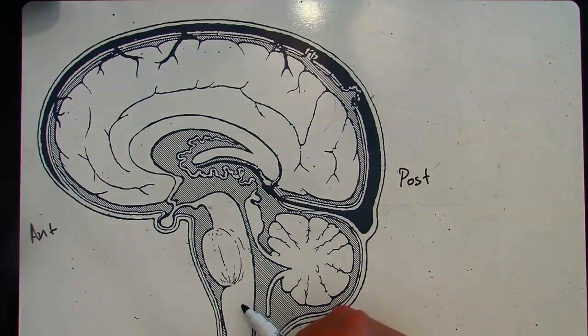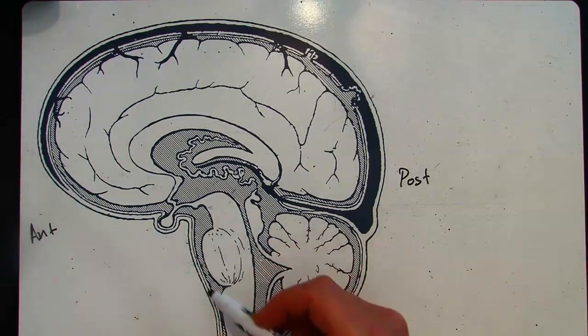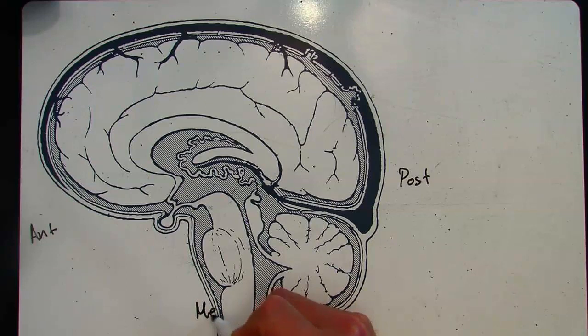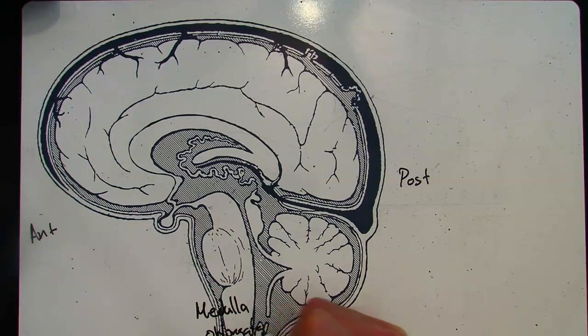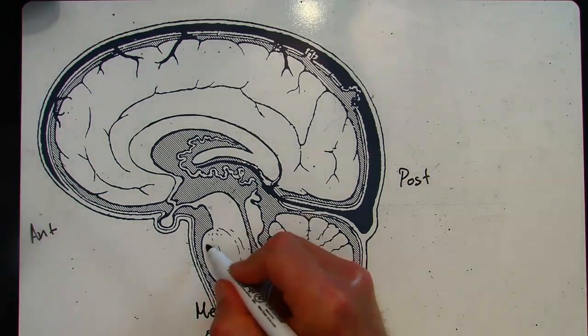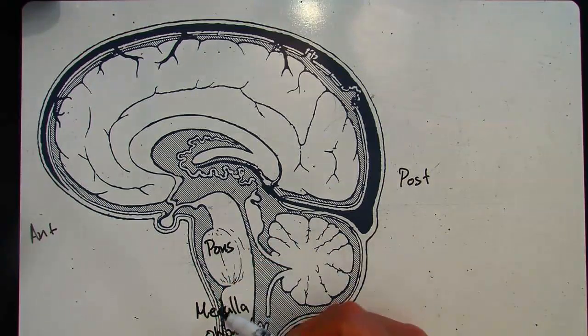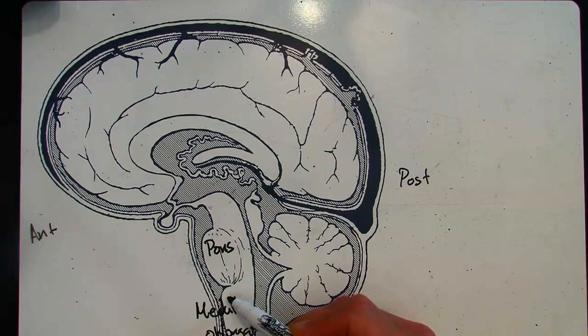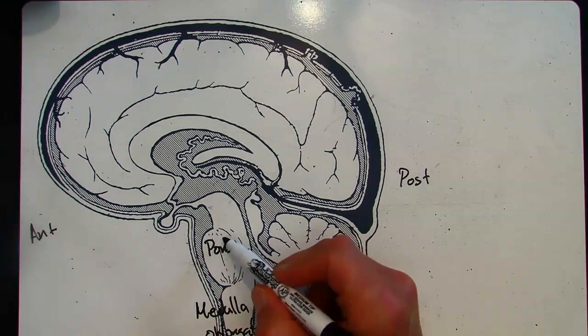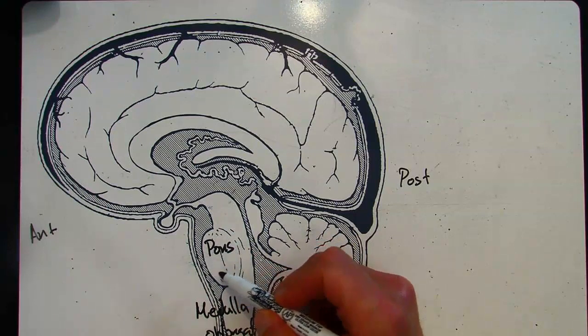So if we start down here, here's the brain stem. Down here this bump is the medulla oblongata. Up here is the pons. Remember that the medulla oblongata has the cardiovascular respiratory center. The pons is involved in breathing in and out.